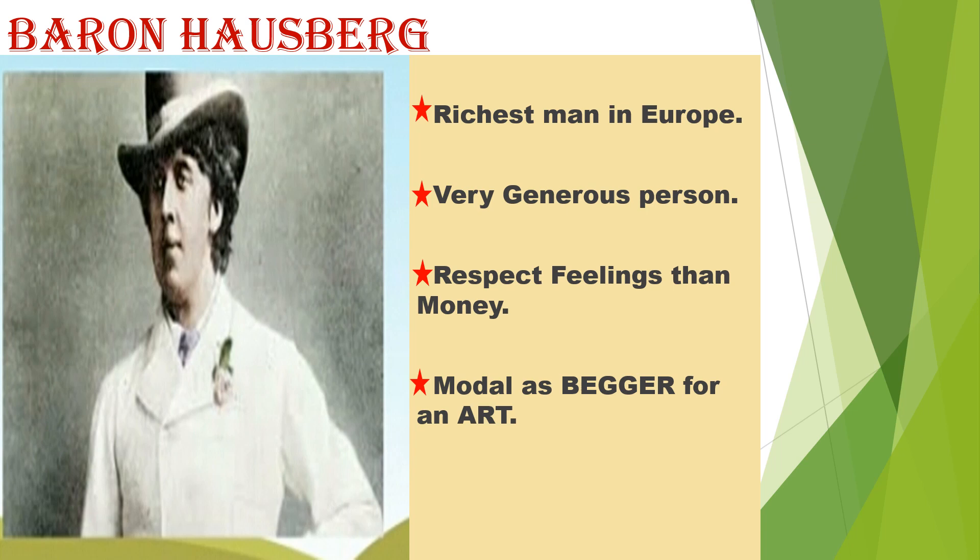He was a millionaire. Yugi was surprised and did not believe what he heard from Alan. The name of the millionaire was Baron Herzberg. He was the richest man in Europe — a man who respects feelings more than money. He had a craze for paintings, so he stood as a model beggar for Alan's art. This was told to Yugi by Alan Trevor.